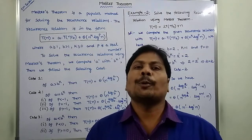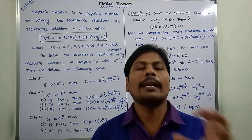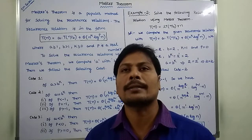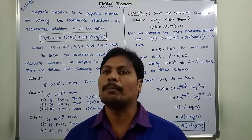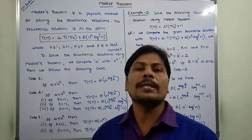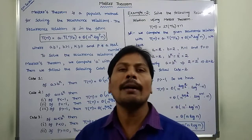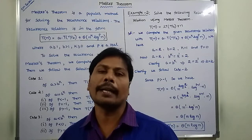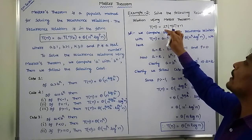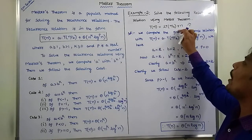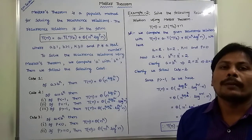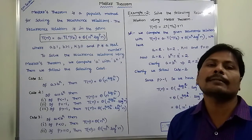In the previous video, we already solved one example problem using Master Theorem for finding the time complexity of a given recurrence relation. In this video, we have to solve another problem using Master Theorem. We have to find out the time complexity of the given recurrence relation: T(n) = 2T(n/2) + n. This recurrence relation is the merge sort recurrence relation.